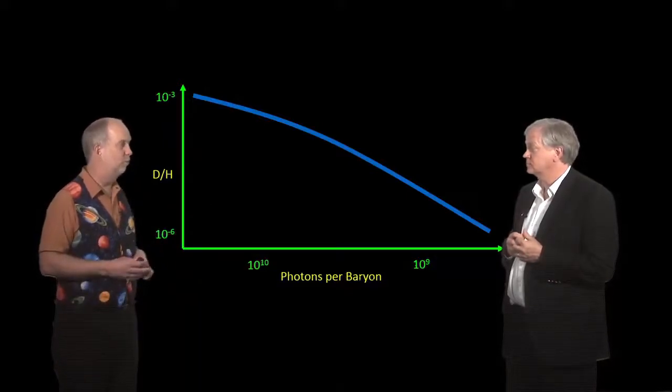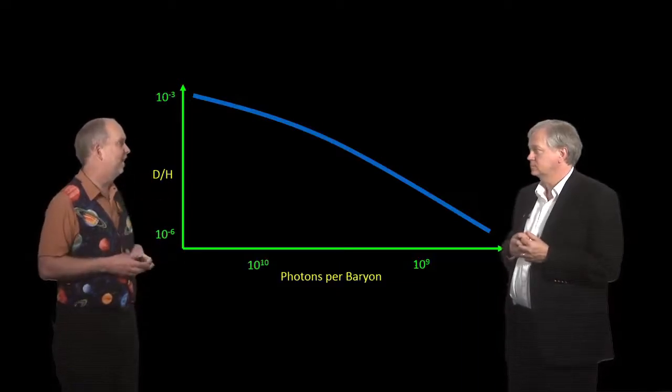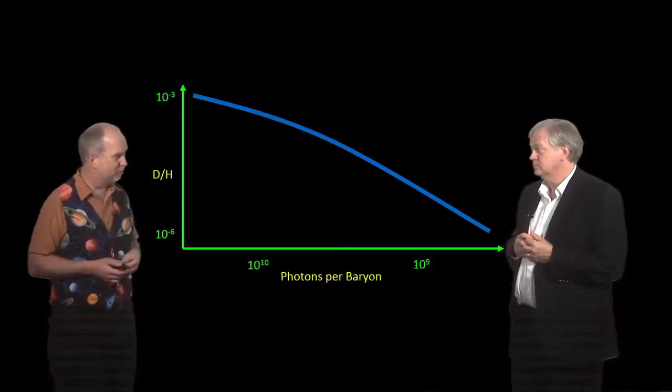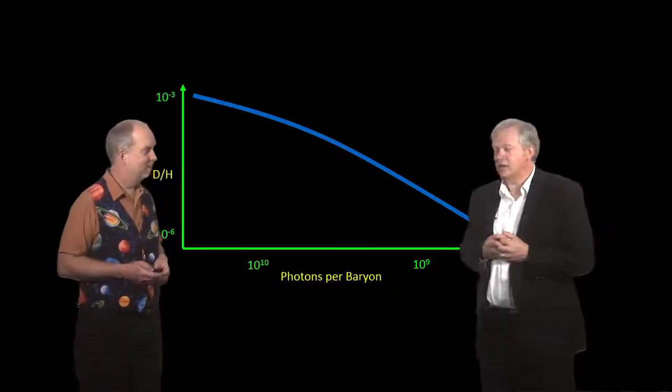So if we look in the oceans, or we look on Earth, or look in the sun, we cannot be sure that the ratio of deuterium to hydrogen we see there is the same ratio it was to begin with. Well, not only can we not be sure, we're almost sure it isn't the same because, for example, a star like the sun destroys most of the deuterium throughout its lifetime.